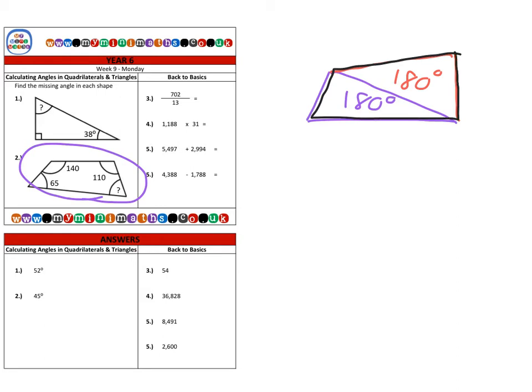Therefore, the sum of the angles—all four angles in the quadrilateral—will always equal 360 degrees. An easy way to remember this, of course, is for a square or a rectangle, where we know that each of those angles are right angles. So four lots of 90 degrees gives you 360.